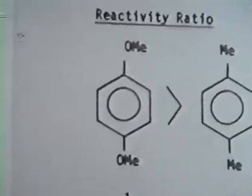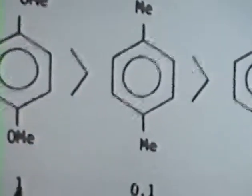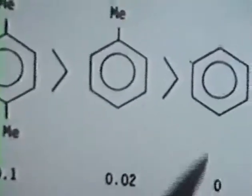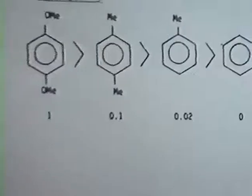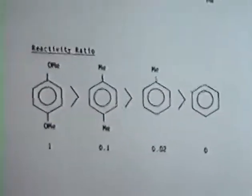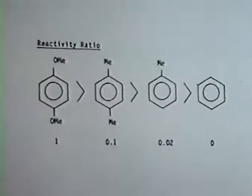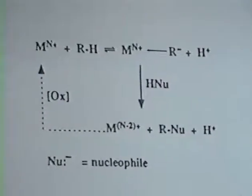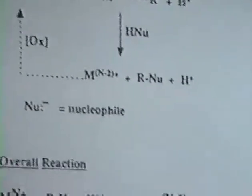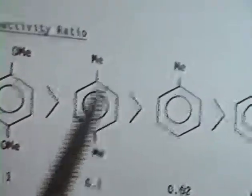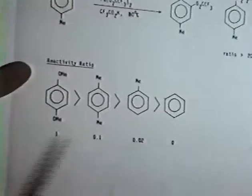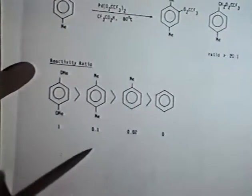One can also study reactivity ratios by competition experiments, where we have two different arenes present, and one sees the following ratio: 1 to 0.1 to 0.02 to 0, the parent benzene won't react. Now that tells you two things. First of all, that this scheme that we propose is indeed a reasonable one, because if you're going to do an electrophilic attack, the most electron-rich arene should react preferentially, and that's what you see. As you make the arene more and more electron-rich by putting in an alkyl group, and finally alkoxy groups, the rate goes up.